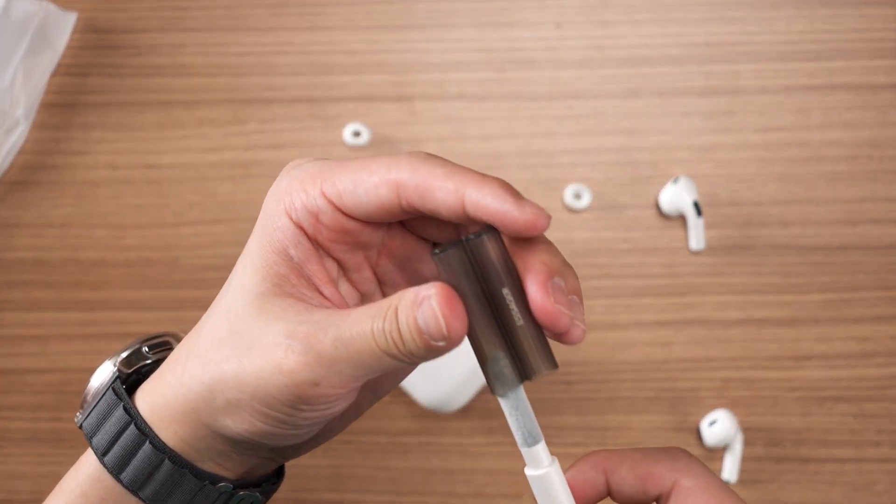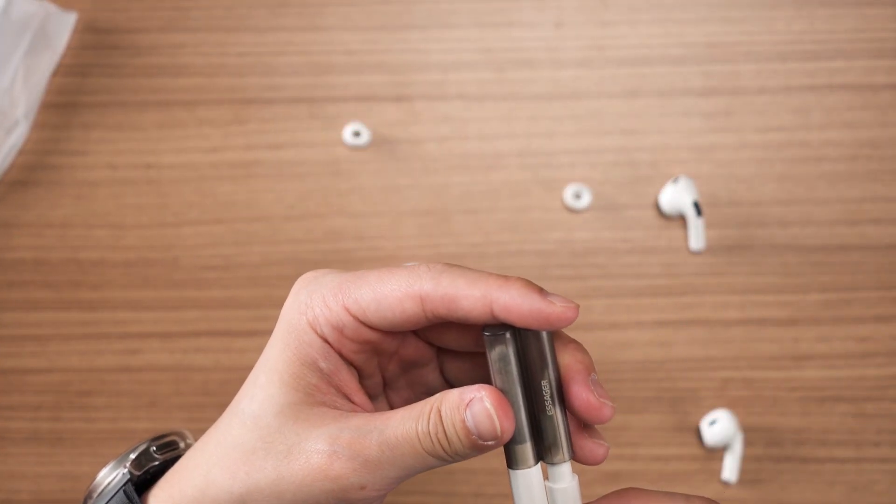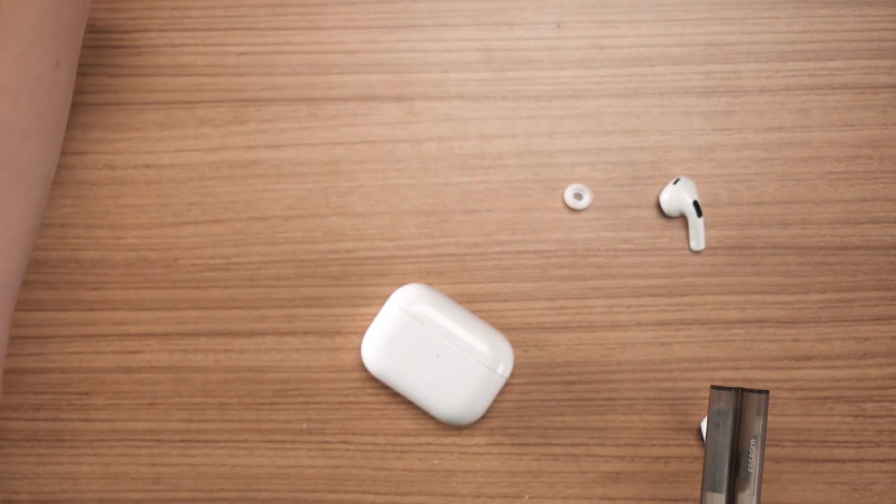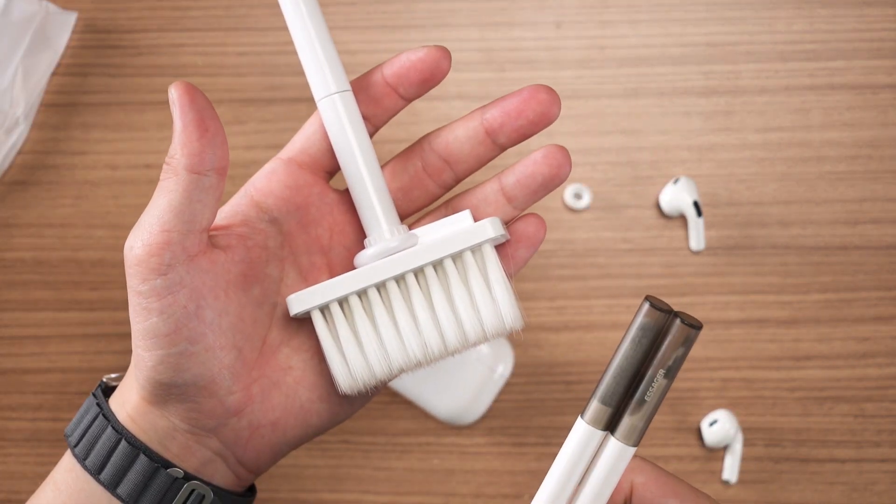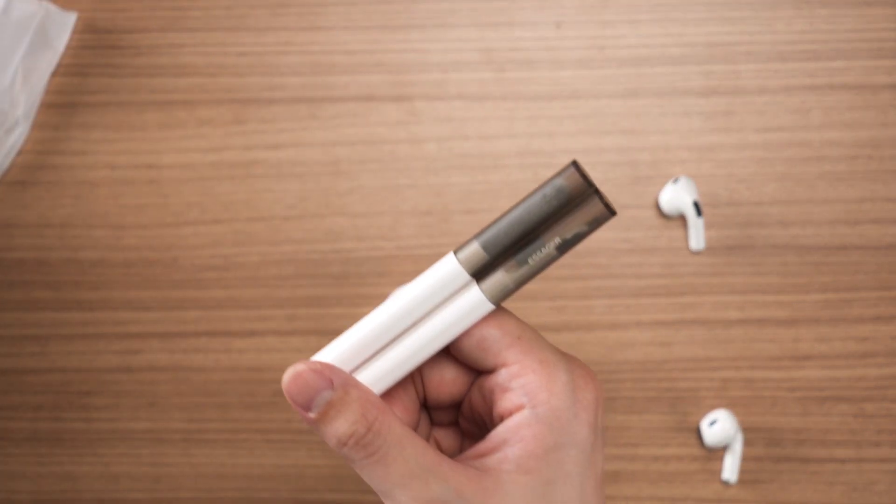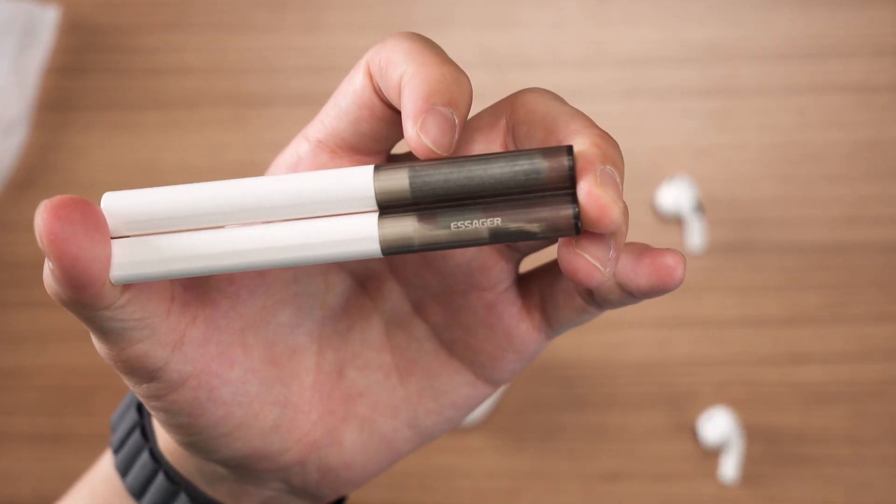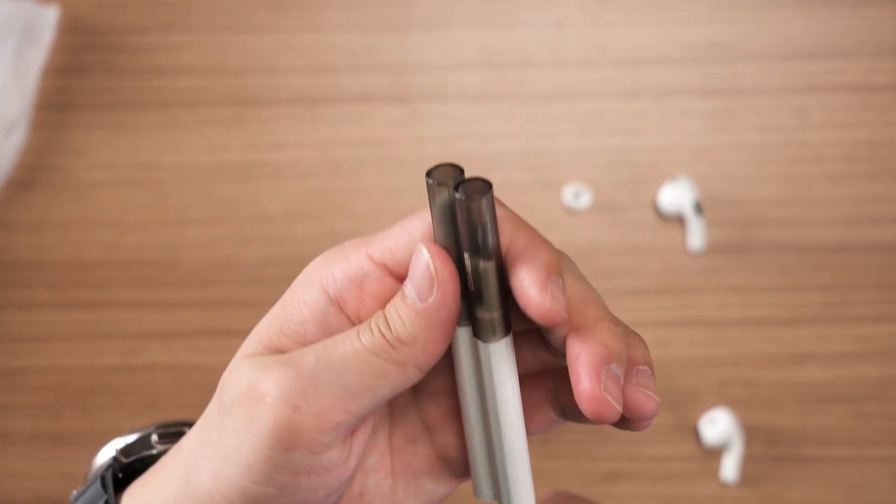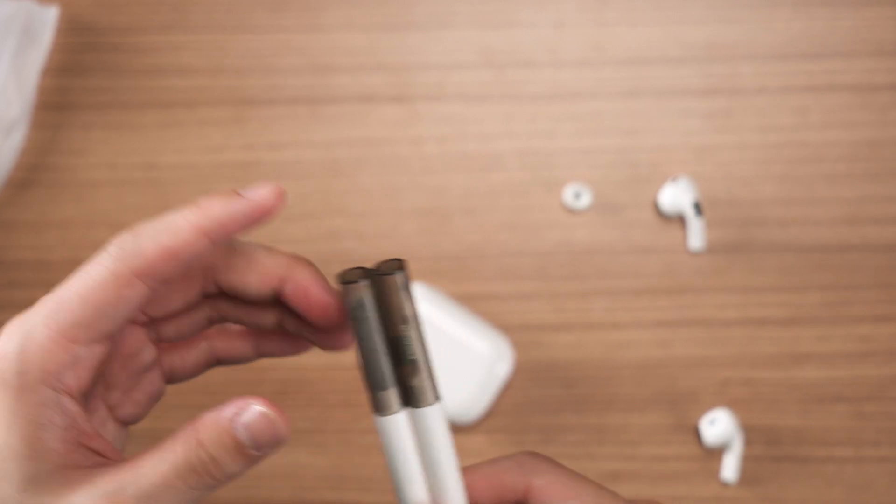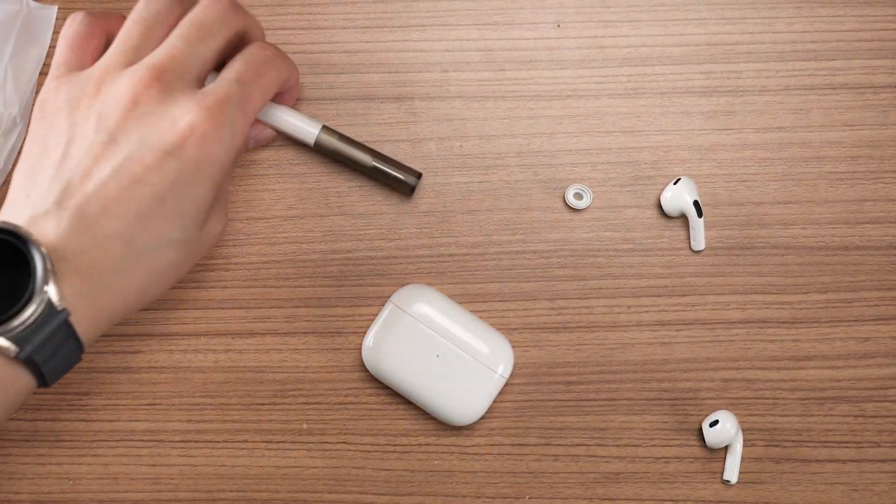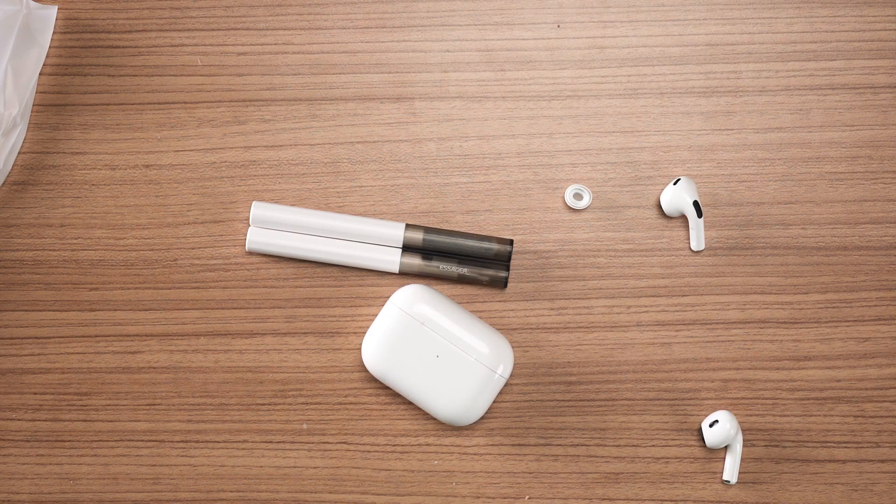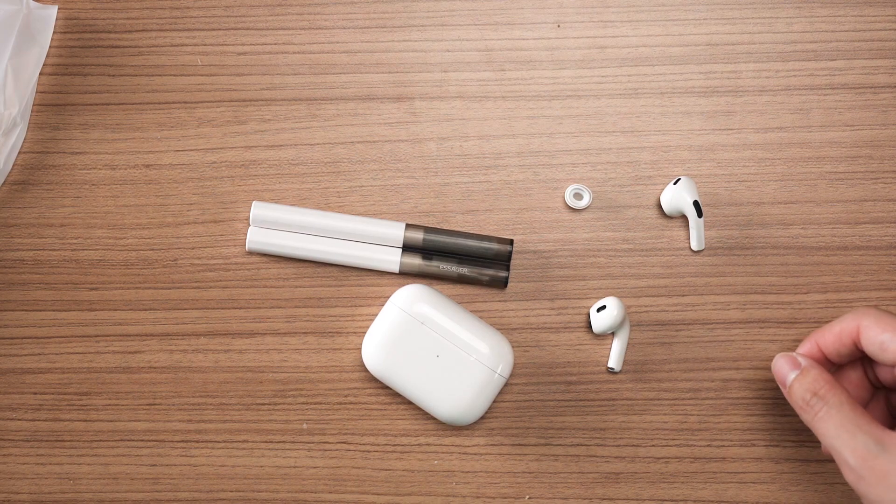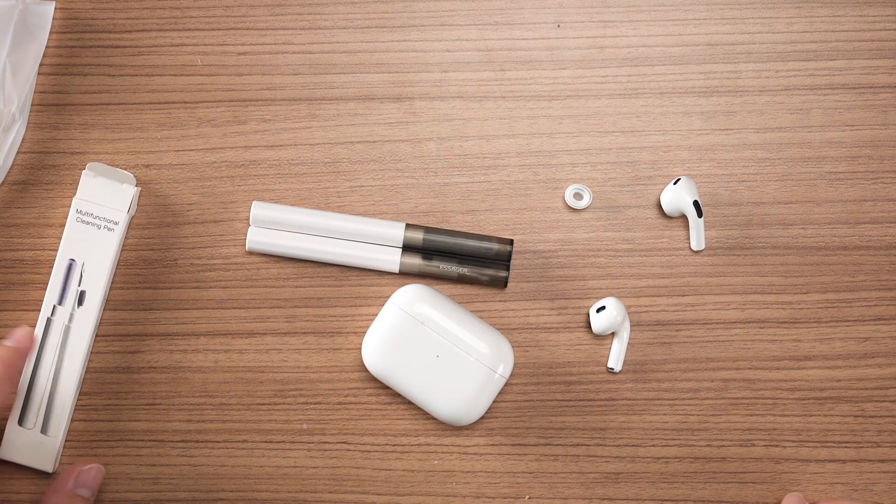That's technically how you use this pen here. They are available in many different flavors, I would say. One of it is in this kind of brush form. But it is also available by many other brands. This one that I got was by Essager. Don't know how to pronounce it, but it is available in many different varieties from other brands as well. That's pretty much it. Very quick video on how to clean your earbuds. Please clean them because they are disgusting. And if you don't clean them, then your sound quality will be affected.